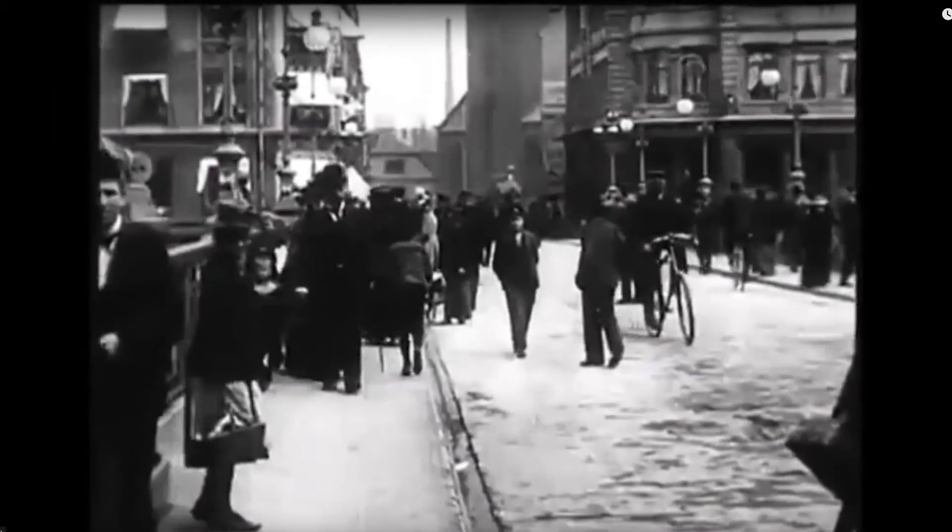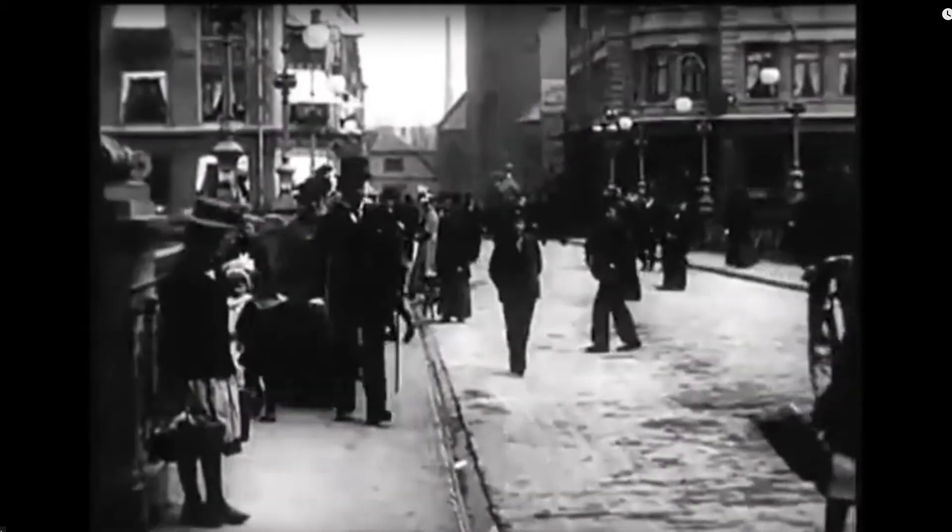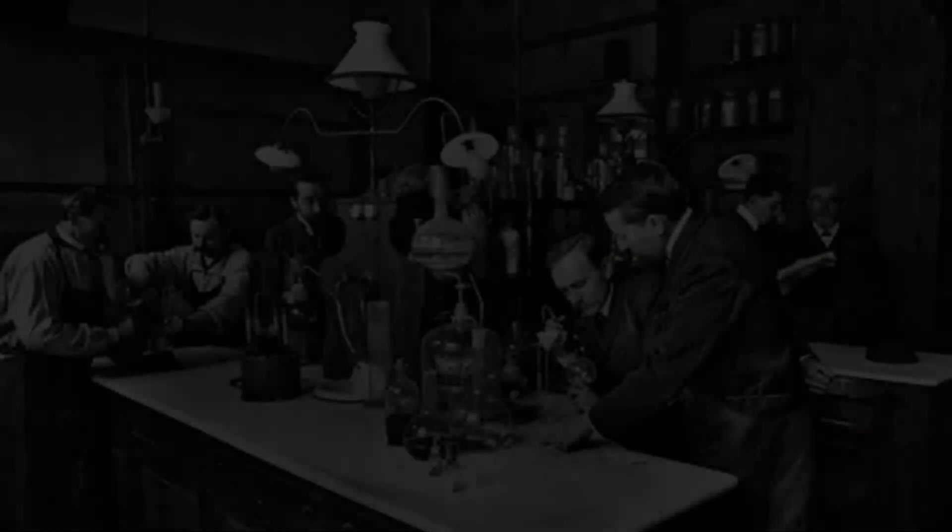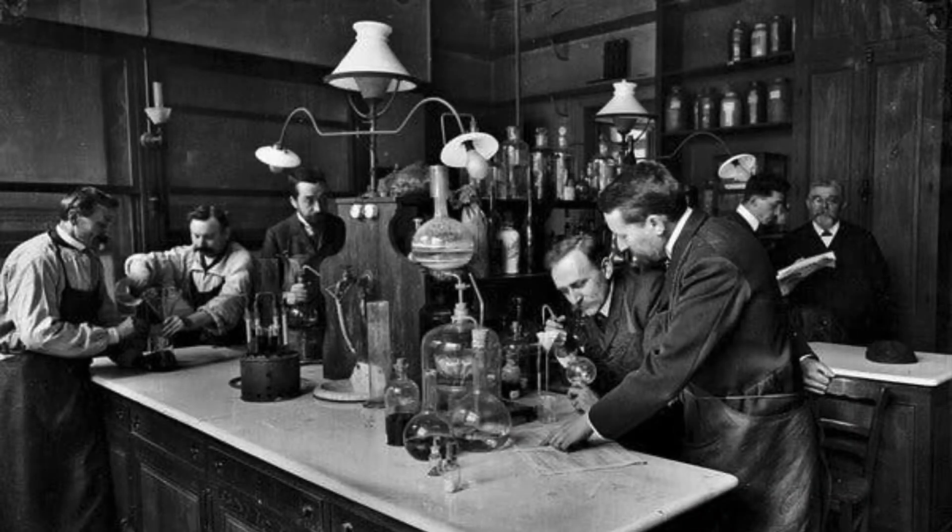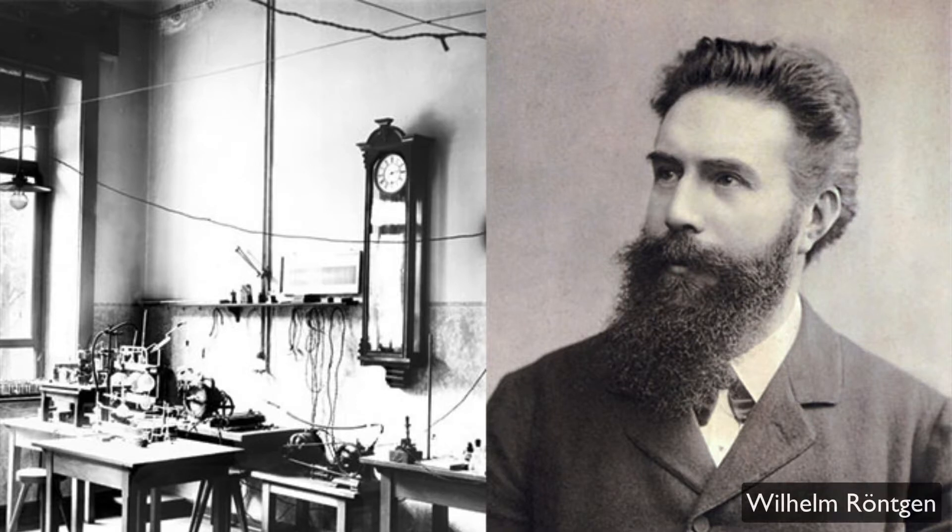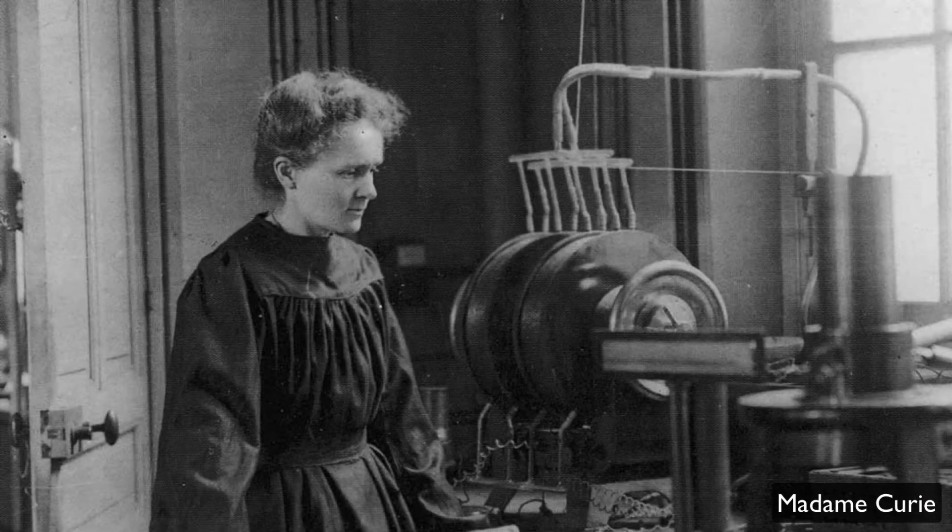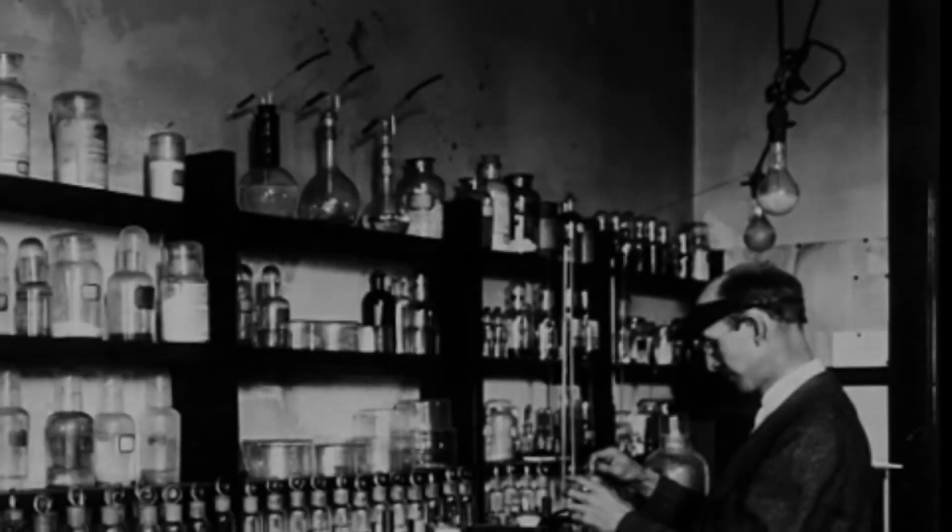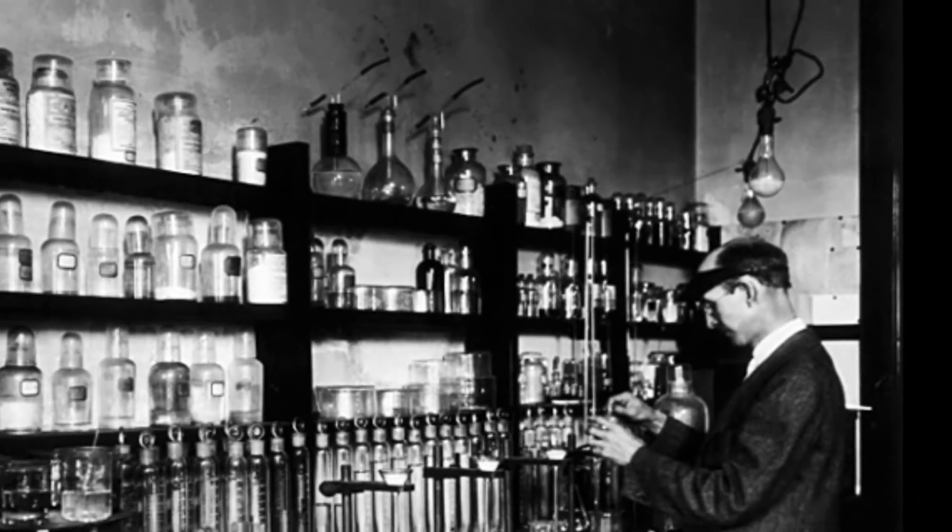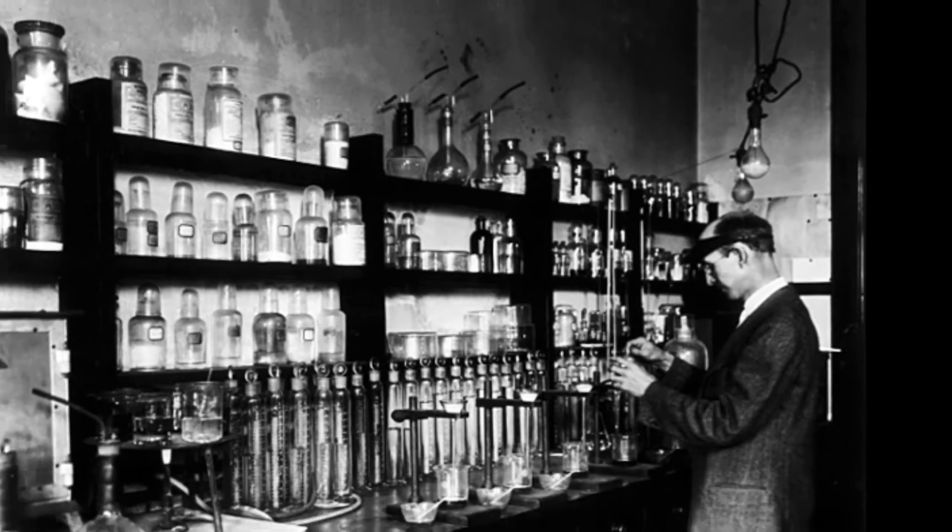To understand how the Geiger counter came into being, we need to first go back to around the year 1900, when there were scientific investigations centered around trying to discover the invisible structure of radioactive atoms. Wilhelm Röntgen's famous discovery of x-rays in 1895 and Madame Curie's discoveries of radioactivity from polonium and radium between 1898 and 1902 led the way to a concerted effort by several scientists to probe into the invisible universe of the atom.